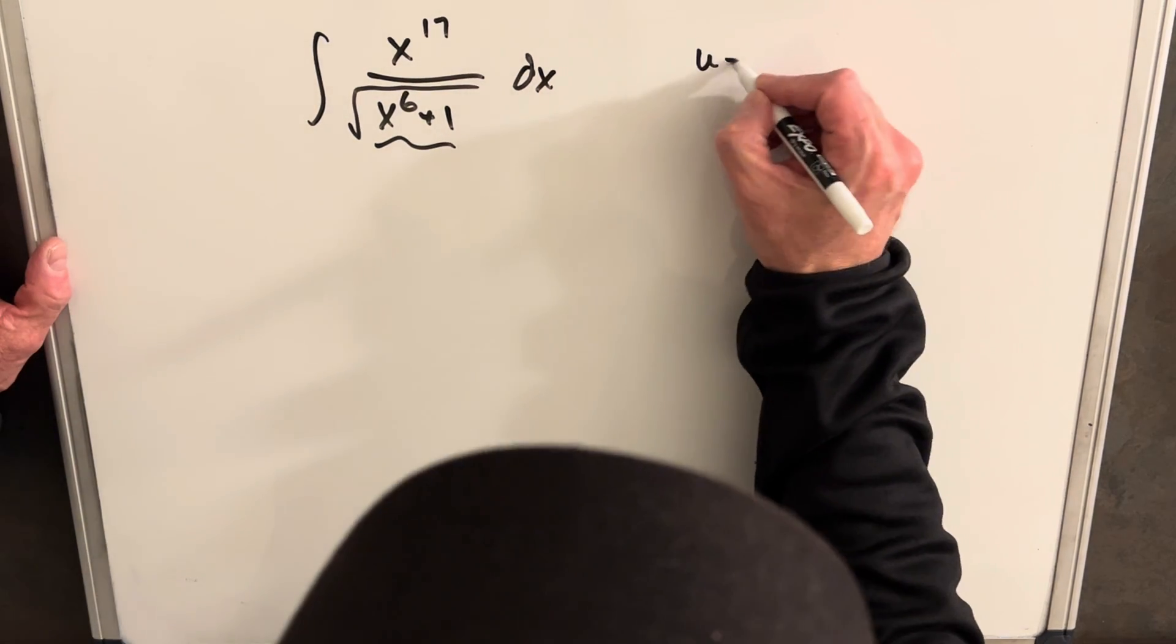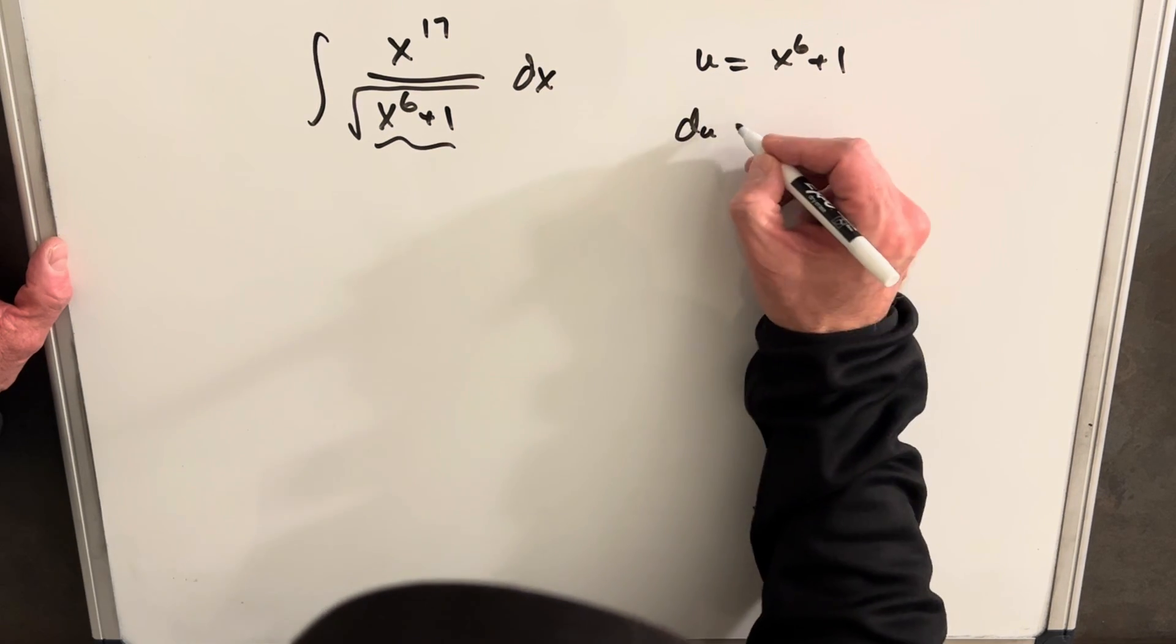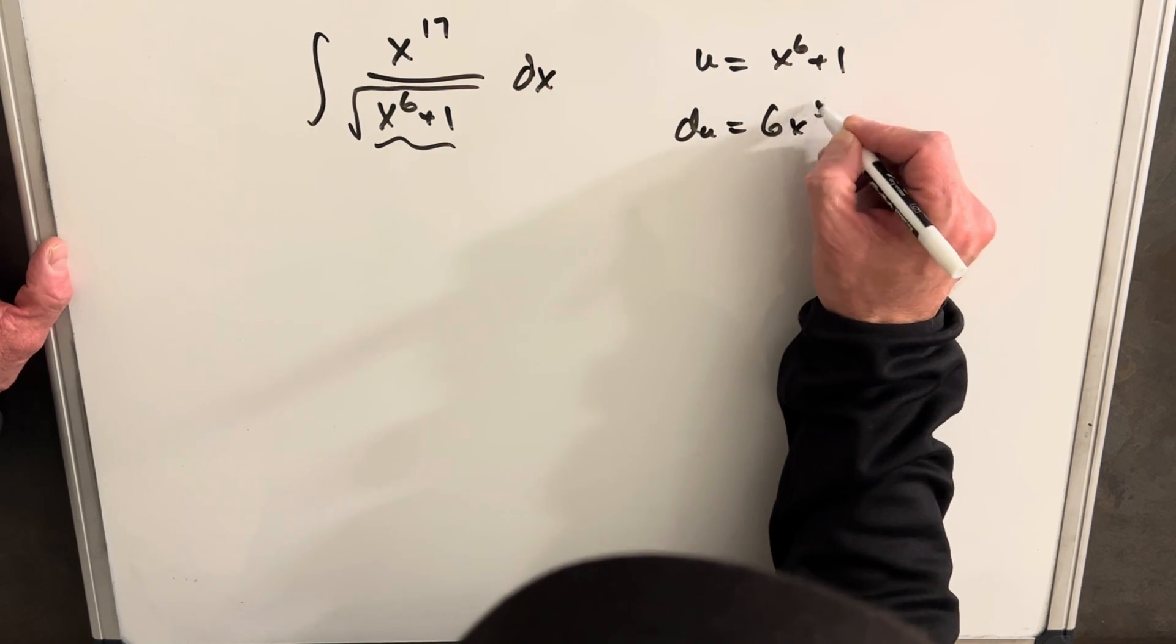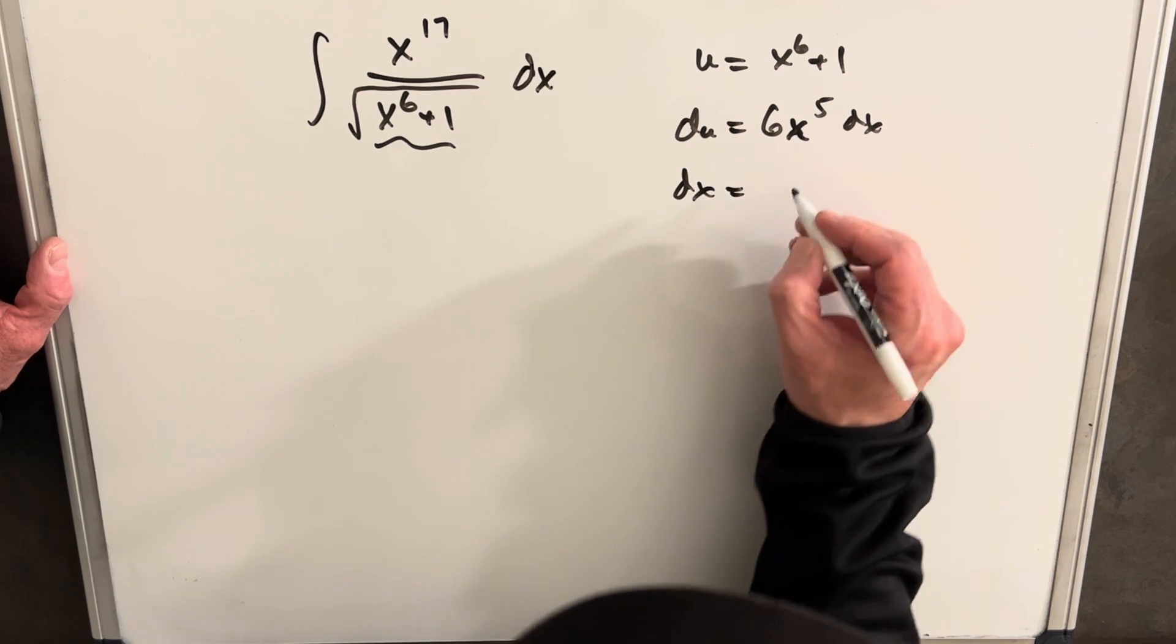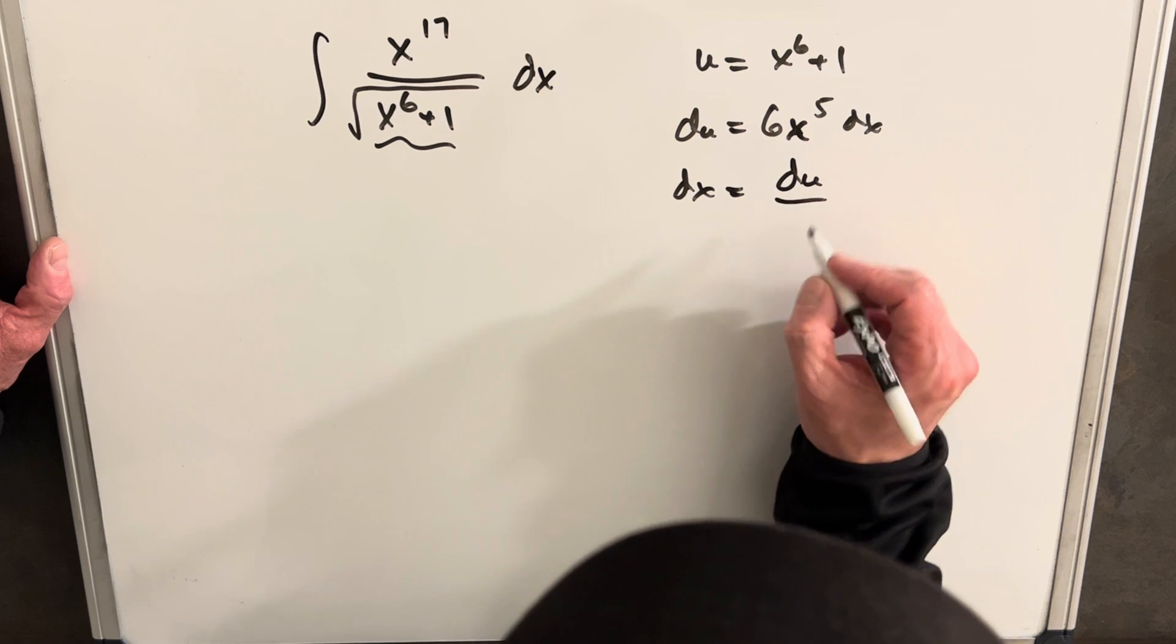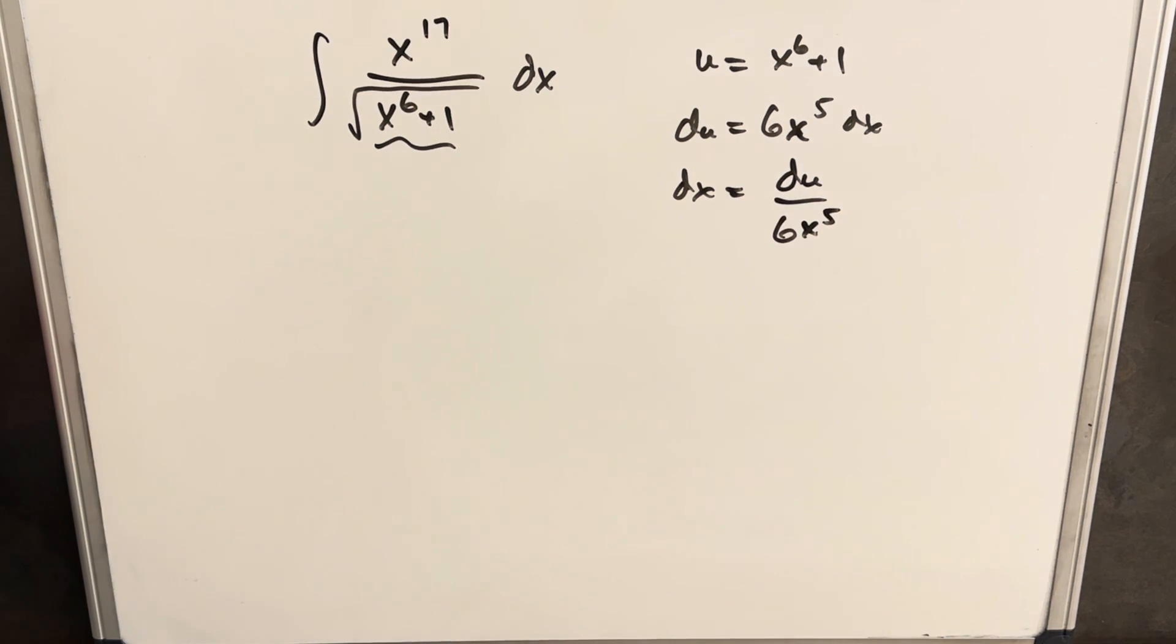So what I want to do is try the substitution u equals x to the 6th plus 1. We'll get our derivative du. It's going to be 6x to the 5th dx, but I want to solve for dx just because I want to substitute it in that way. So we'll have du over 6x to the 5th here.